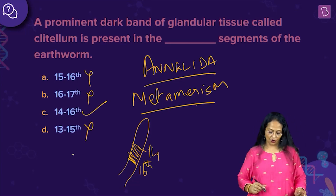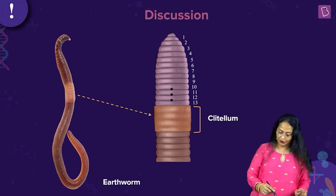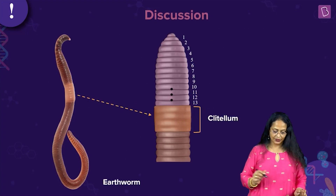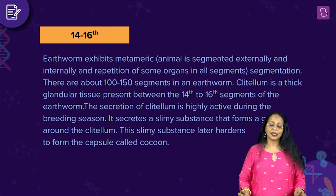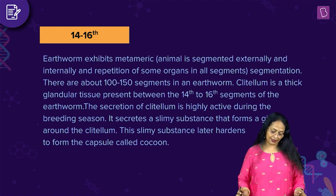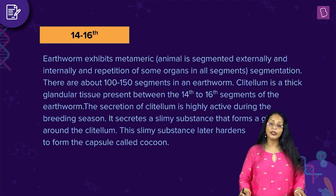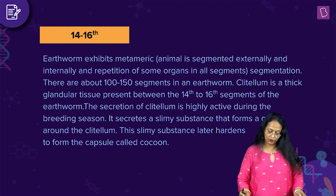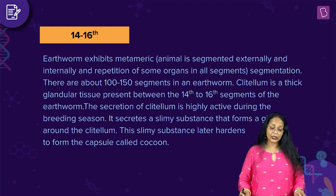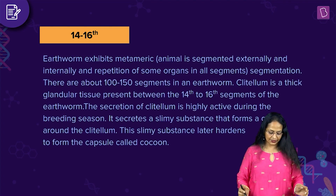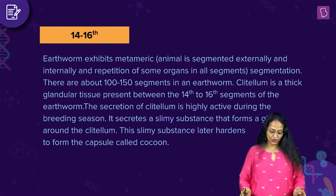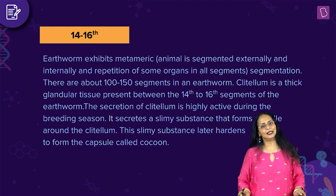So, clitellum is present between the 14th and the 16th segment. The rest of the options are wrong. Between the 14th and the 16th is where you see the clitellum. Earthworm exhibits metameric segmentation — the animal is segmented externally and internally with repetition of some organs in all segments. There are about 100 to 150 segments. The secretion of the clitellum is highly active during the breeding season, secreting a slimy substance that forms a girdle — a thick layer around the clitellum — which later hardens to form the cocoon. The right answer is the 14th to the 16th segment.